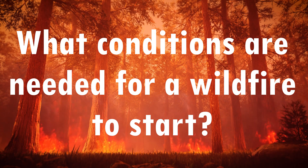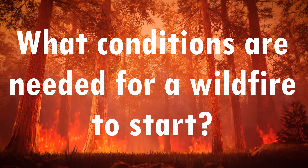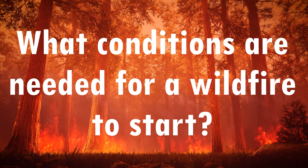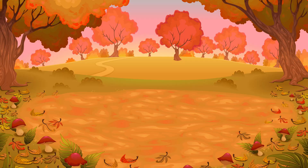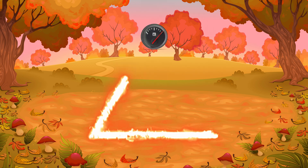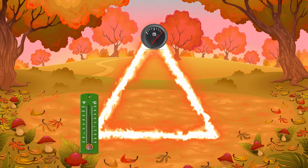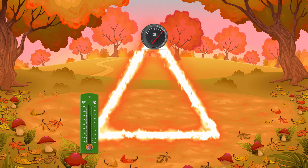What conditions are needed for a wildfire to start? For a wildfire to start, several key elements need to come together. These elements are often referred to as the fire triangle, and they include fuel, heat, and oxygen.